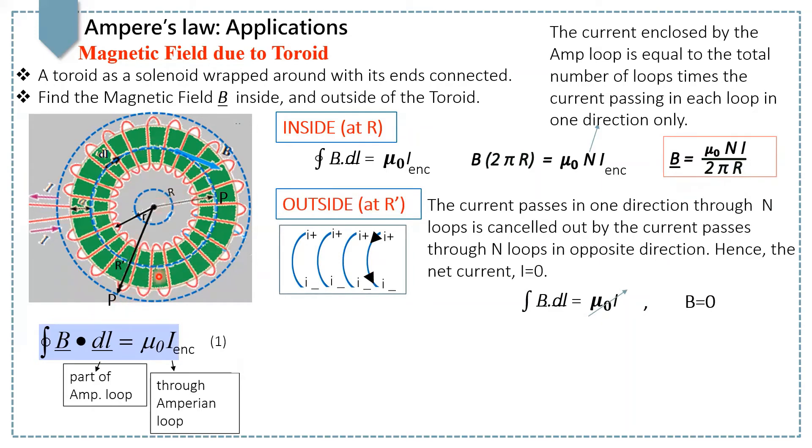The net current is 0 because the current going into the page is cancelled out by the current coming out of the page in each and every coil loop. Let's have a look at half of the wire loops. The wires are coming out and going in. Hence, the net current is cancelled out in each and every loop.